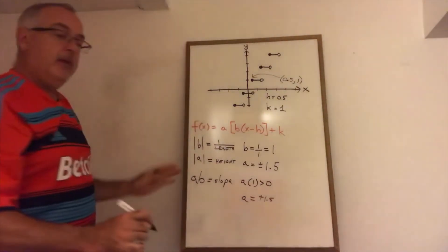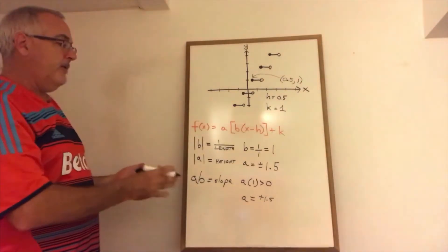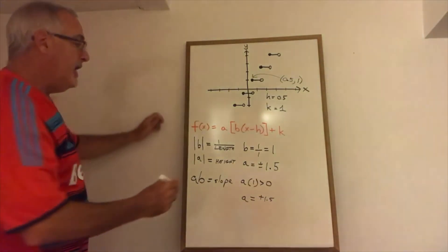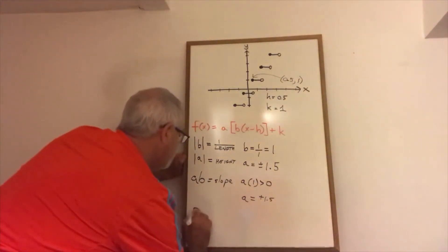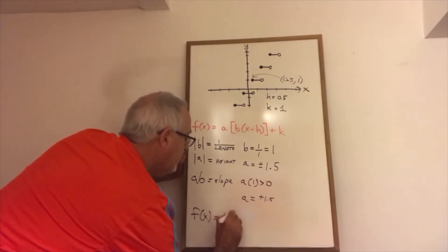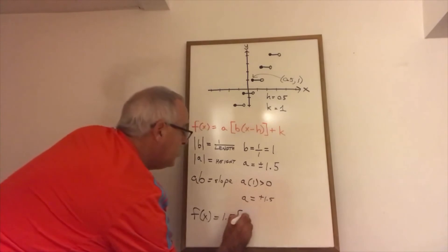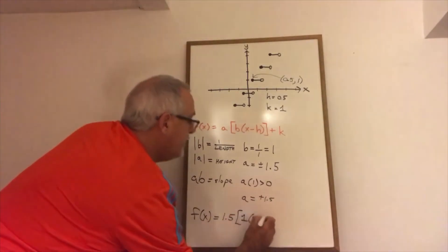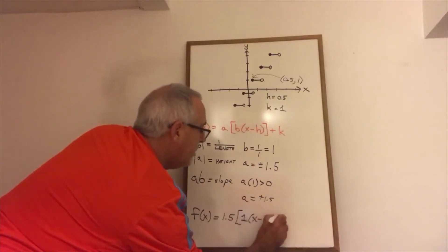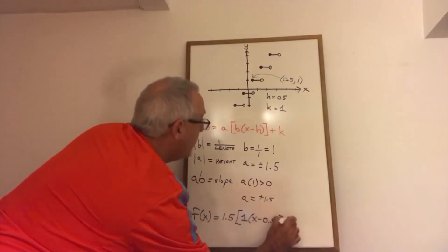Now that I have that information, I have all four of a, b, h and k and I can write my equation. a is 1.5, b is 1, h is 0.5, and k is 1.